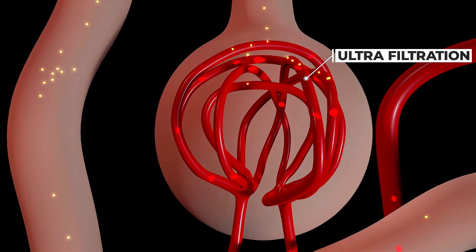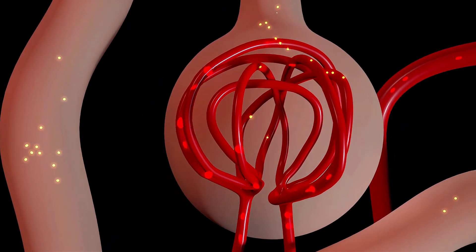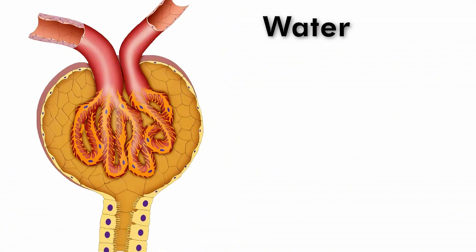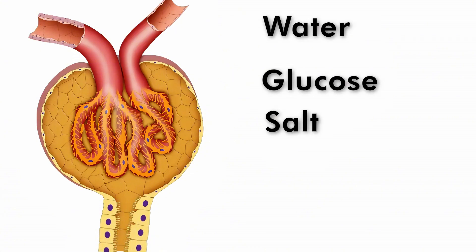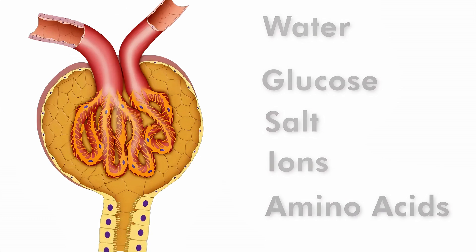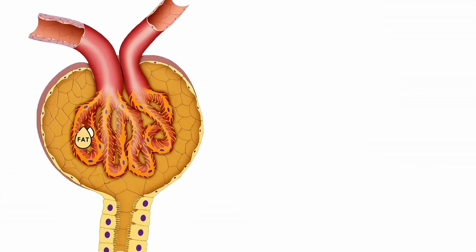The fluid that collects in the nephron is called filtrate. Filtrate contains waste materials along with some useful substances like water, glucose, salt, ions, amino acids, etc. Remember that large molecules and blood cells do not enter the filtrate — only small molecules can pass into the Bowman's capsule's lumen.